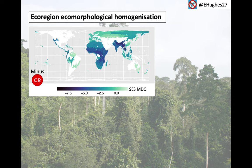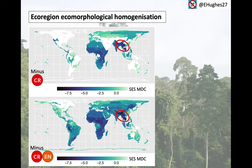But what does this look like across space? This map shows the standard effect size mean distance to centroid for each ecoregion when we lose critically endangered species. White areas on the map are those where no critically endangered species are lost. Darker colours indicate the most homogenisation, and this is significant under a value of minus 2. You can see the most imperiled areas are across parts of East Asia, particularly the Himalayan uplands and parts of the African continent. When we further lose endangered species, the picture is broadly similar, with more ecoregions added as endangered species are found in these areas.